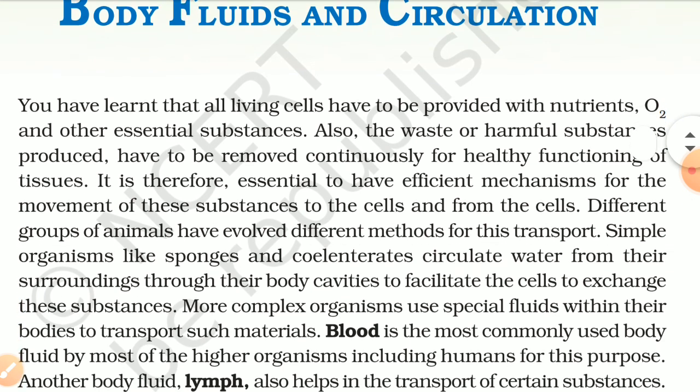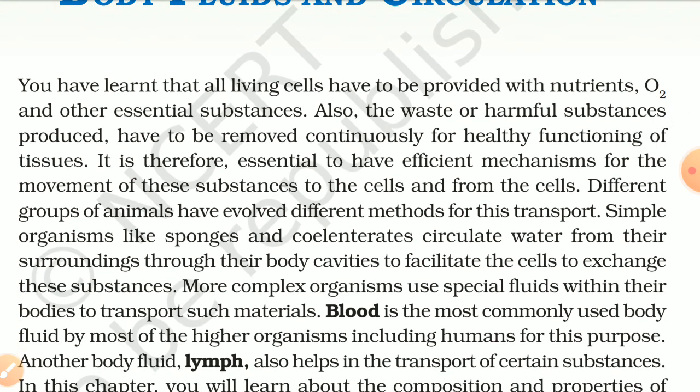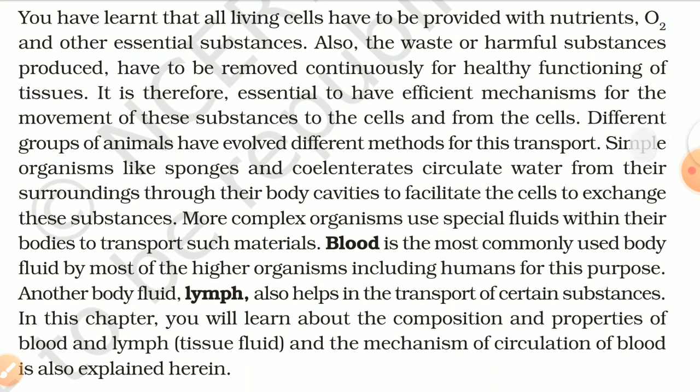Simple organisms like sponges and coelenterates circulate water from their surroundings through their body cavities to facilitate the cells to exchange these substances. More complex organisms use special fluids within their bodies to transport such materials. Blood is the most commonly used body fluid by most of the higher organisms including humans for this purpose. Another body fluid, lymph, also helps in the transport of certain substances.